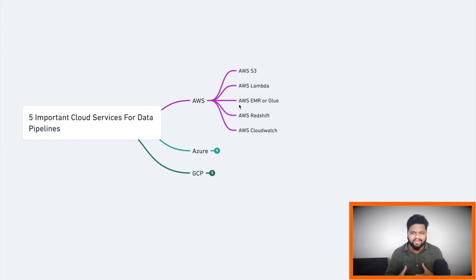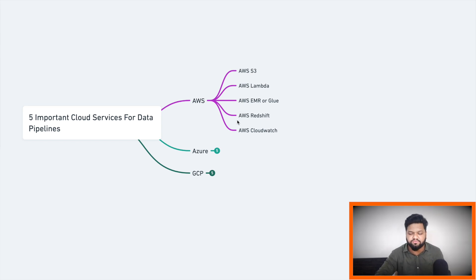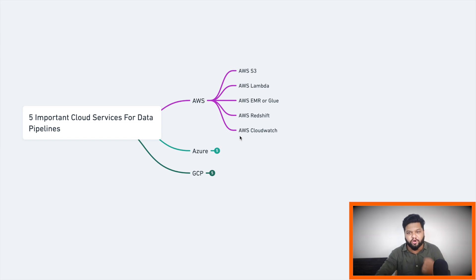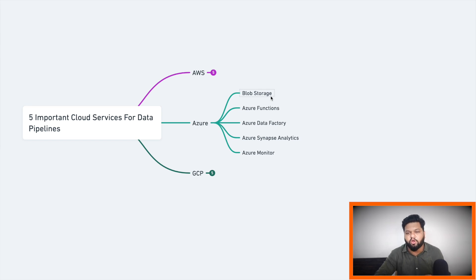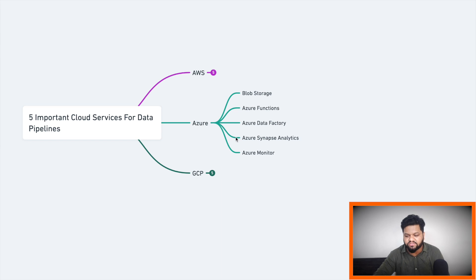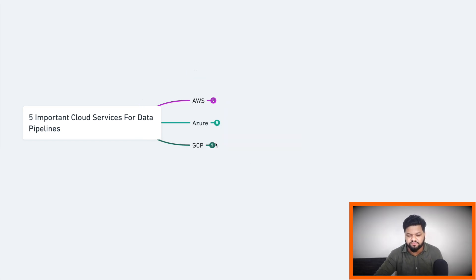Next in AWS is EMR or Glue — these are related to computation and the ETL part. These services help you spin up a cluster, set up Spark and Hive on that cluster, and write jobs to transform your data into the desired format. Next is AWS Redshift, the data warehousing service in AWS, which is very widely used. Then AWS CloudWatch for monitoring, event-based, and cron-based job triggers. In Azure, the storage equivalent is Blob Storage, Azure Functions work similarly to AWS Lambda, and Azure Data Factory is the ETL processing service.